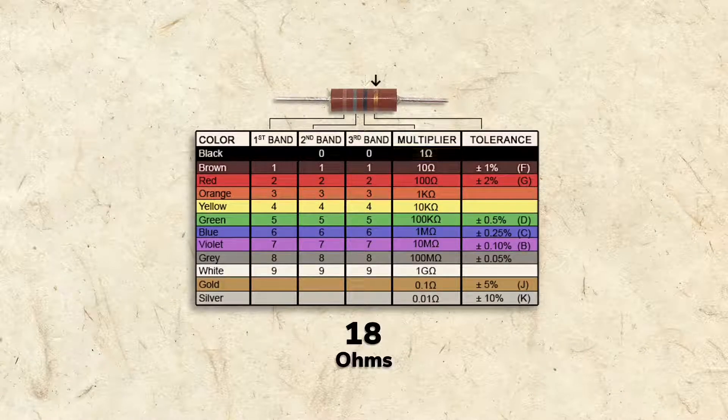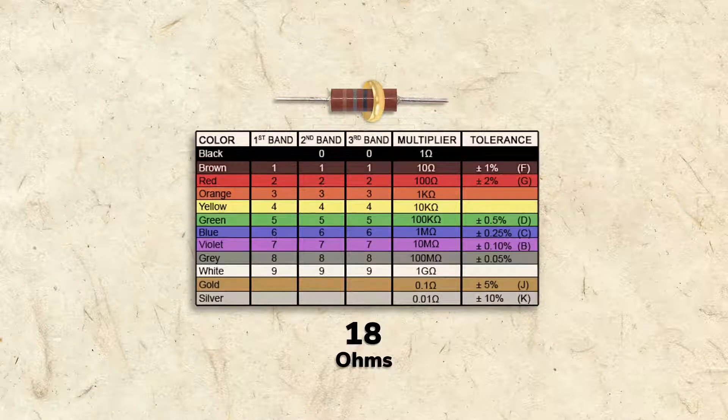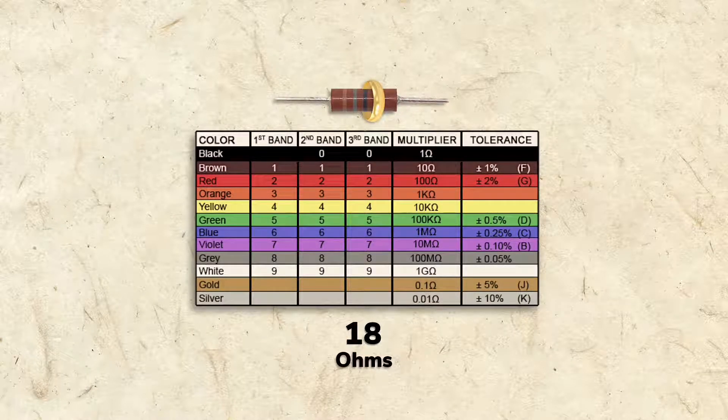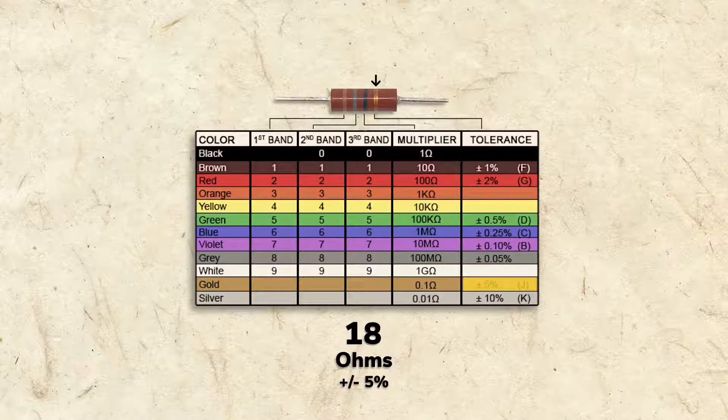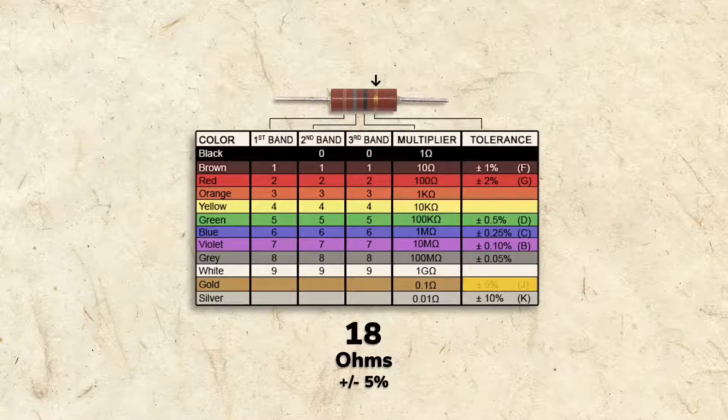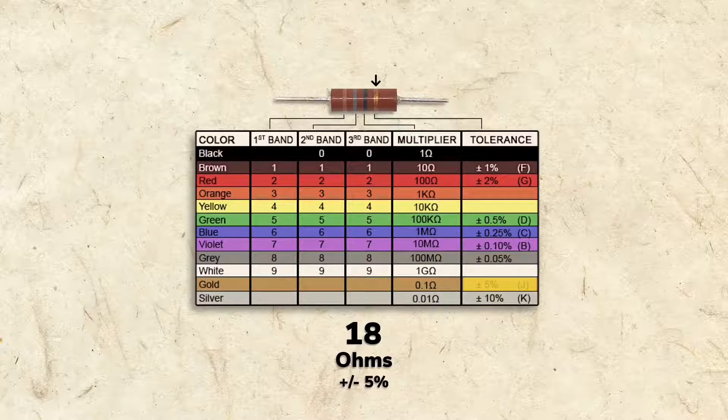The final band is gold, which means this resistor is married. Actually, it represents a plus or minus 5% tolerance. So, the resistor promises not to stray beyond plus or minus 5% of 18 ohms.